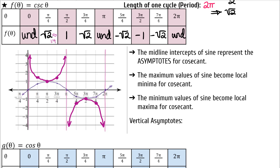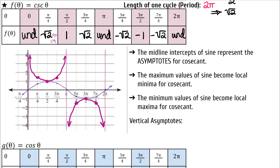Here are the things to remember about cosecant. The midline intercepts of sine represent the asymptotes for cosecant. The maximum values of sine become local minima for cosecant. The minimum values of sine become local maxima for cosecant. Because cosecant is periodic like sine, we will continue to have an infinite number of vertical asymptotes. The first asymptote is at 0, the next at π, the next at 2π.